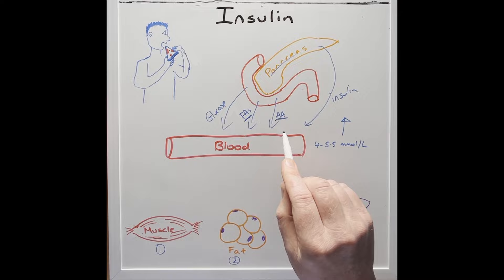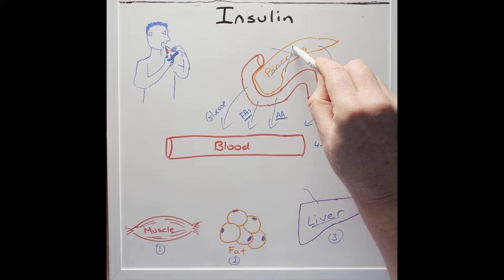So insulin, as you can see, helps to decrease the glucose, the fatty acids and amino acids in the blood after a meal.